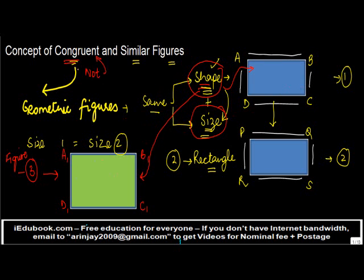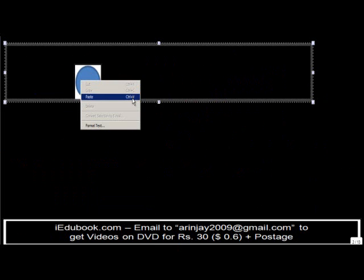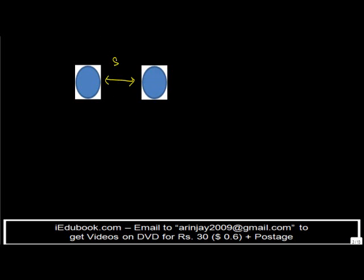In other words, to be congruent, what is necessary is that the shape has to be the same and the size has to be the same. For example, if this is a circle and another circle has to be congruent, what is necessary is that it has to be just a replica of this particular circle — I've just copied it. Because in those two figures, the shape and the size are equal, and therefore we say that these two are congruent.